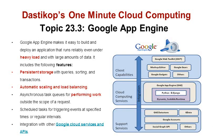In today's session we'll be talking about Google App Engine with reference to its features. Google App Engine makes it easy to build and deploy applications that run reliably even under heavy load and with large amounts of data. Features include: persistent storage with queries, sorting, and transactions; automatic scaling and load balancing; asynchronous tasks for performing work outside the scope of a request; scheduled tasks for triggering events at specified times and regular intervals; and integration with other Google API services.